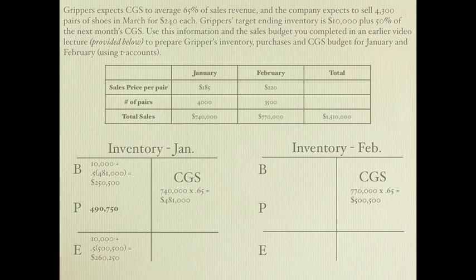Moving to February, beginning inventory equals January's ending, which we've already calculated, so we carry $260,250 over to February's beginning inventory.